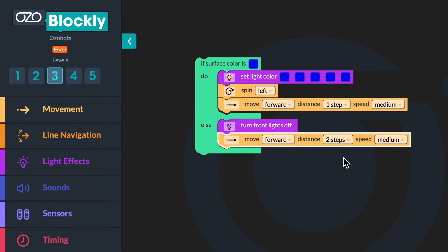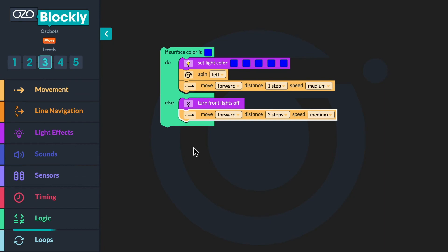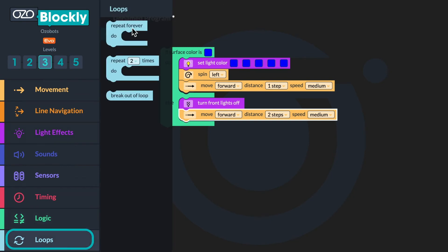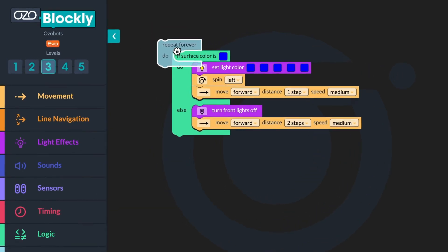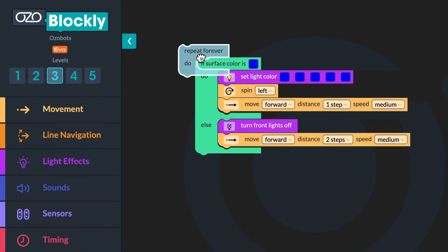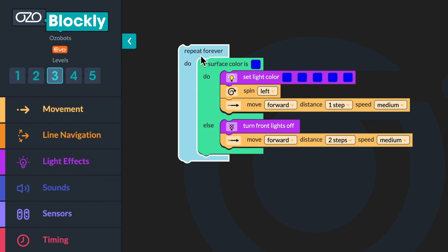Finally, you may remember from a previous lesson, in order for a conditional to continuously be checked, you need a forever loop. Otherwise, when you run the program, the bot will quickly check if it senses the color blue and nothing will happen. You will go to loops and click on a repeat forever do block. Drag the block above the if surface color is blue do block to wrap the loop around the entire sequence.